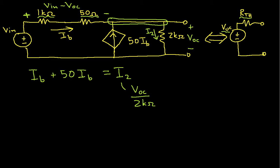And so I can then express IB as VIN minus VOC over 1.05k ohms. This is 1k ohm plus 50 ohms.